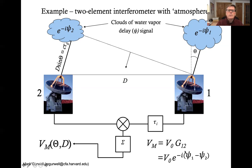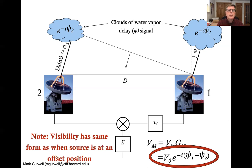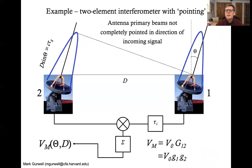Now, of course, these things can vary with time and that means that the visibility, in particular the phase that you measure, will vary with time as well. So what's interesting to note is that when you have this phase difference between the two antennas versus what you would expect for the phase to be zero, that has the exact same functional form as if the source is at an offset position.